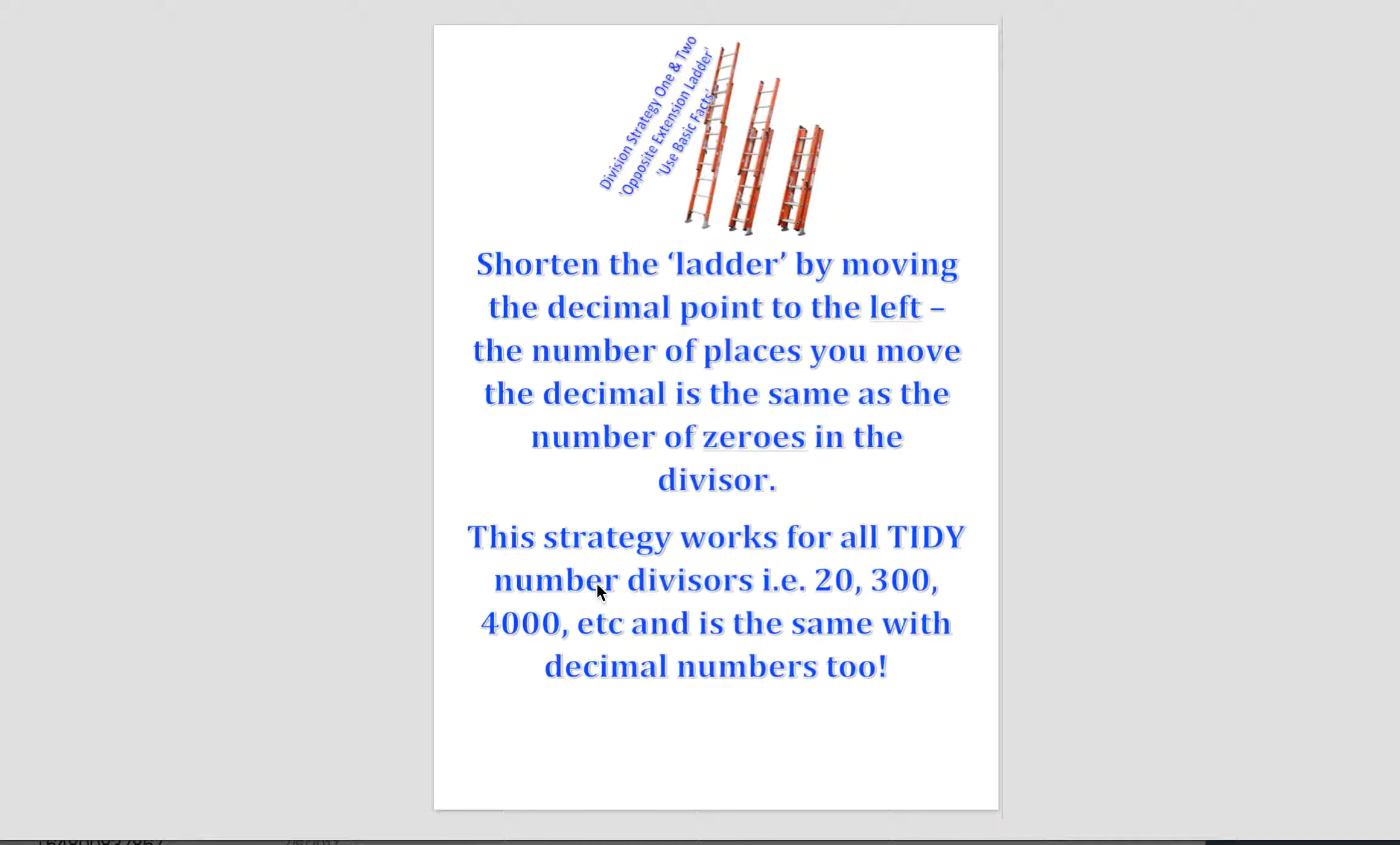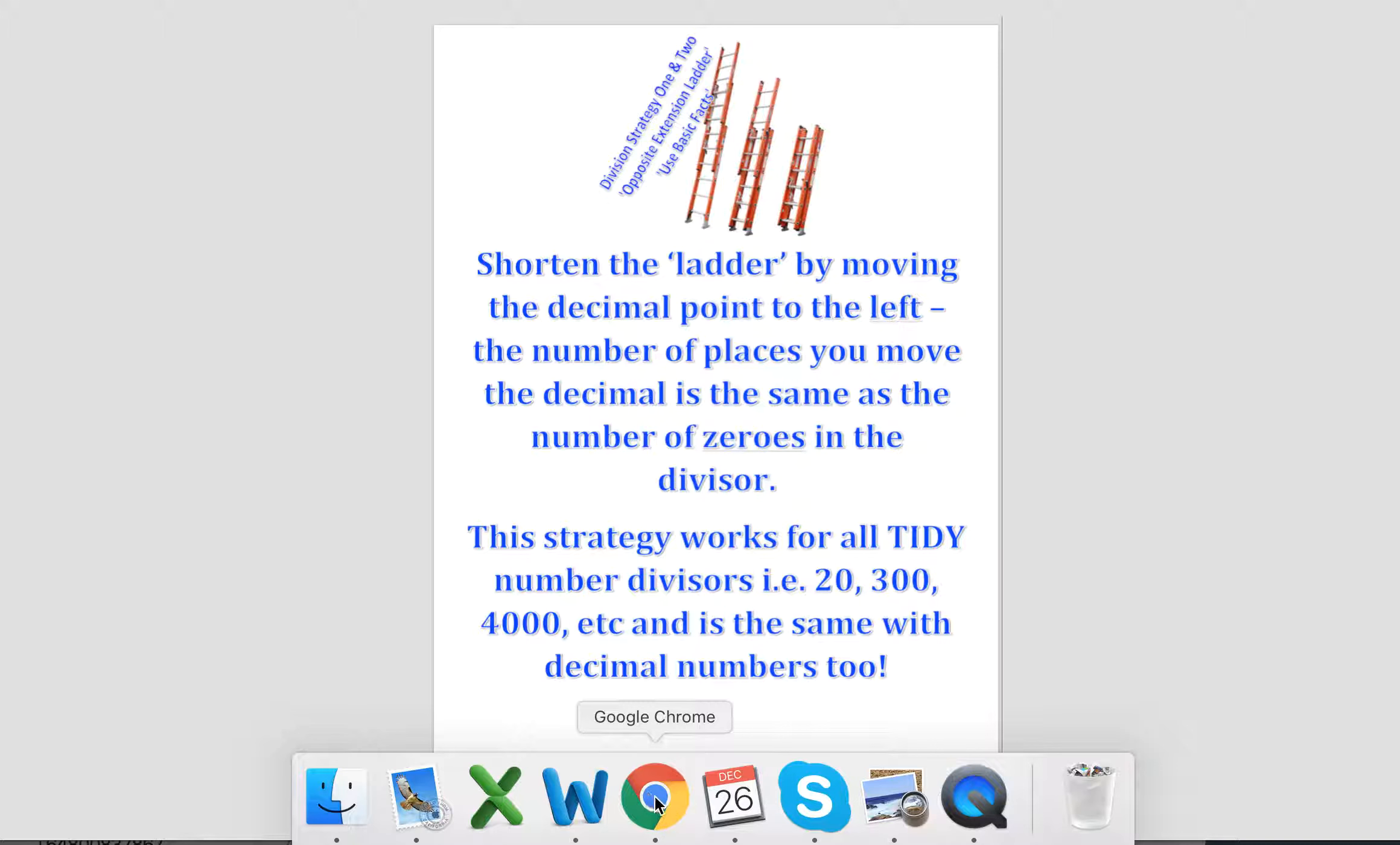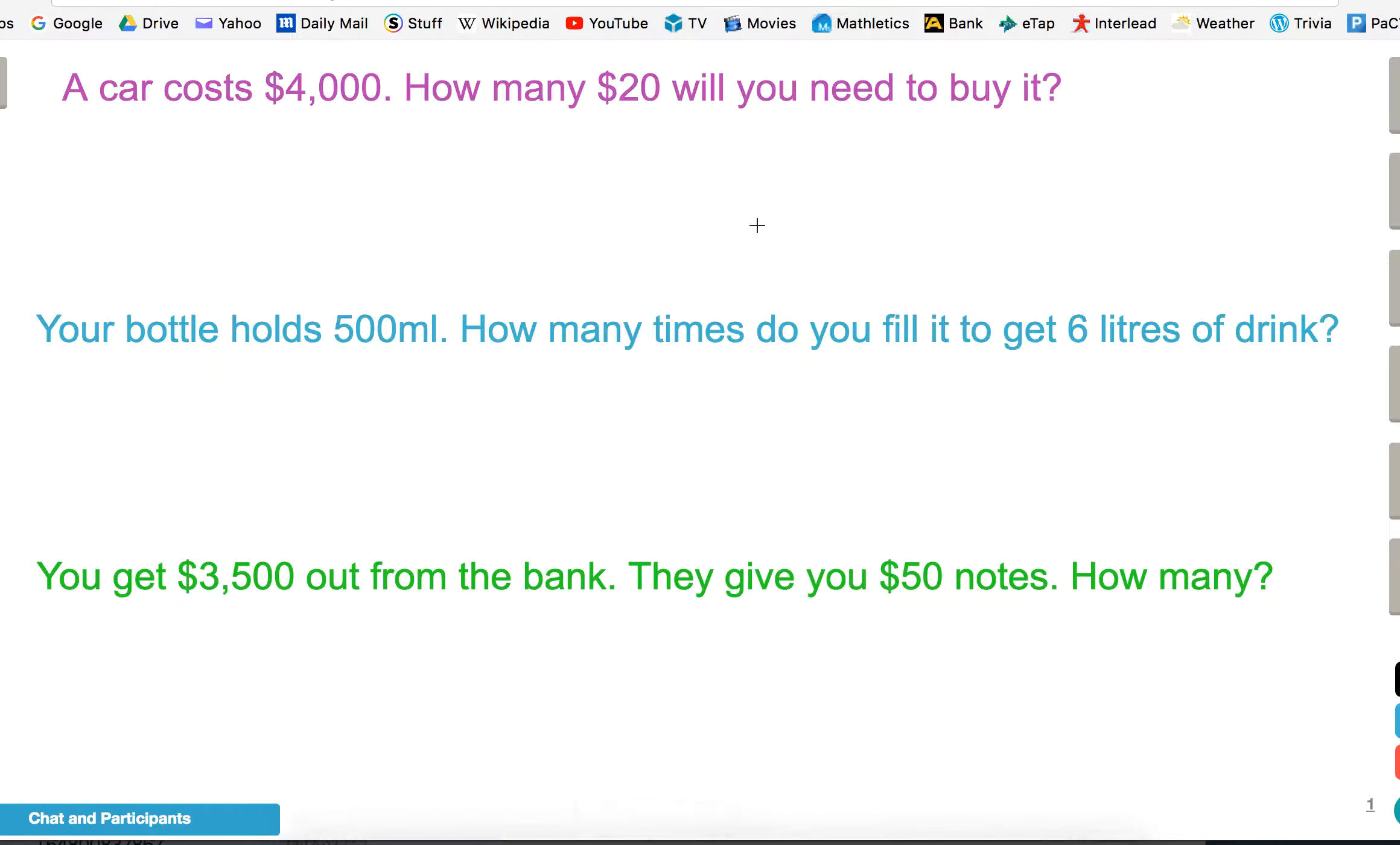That's the number we're dividing by. This strategy works for all tidy number divisors like 20 or 300 or 4,000. Let's have a look at some examples. First one, a car costs $4,000. How many $20 notes will you need to buy it?